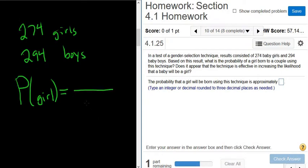So the probability of picking a girl is the number of ways to pick a girl divided by the number of ways to pick a person. So there are 274 girls, so there are 274 ways to pick a girl. To figure out the number of ways to pick a person, we have to add, right?